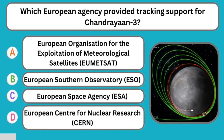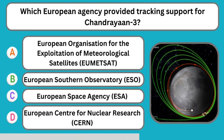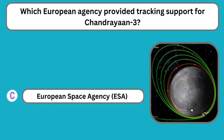Question number eleven: Which European agency provided tracking support for Chandrayaan 3? The correct answer is the European Space Agency, ESA.